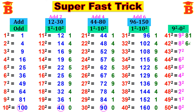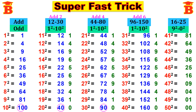We know: 9 squared is 81, 8 squared is 64, 7 squared is 49, 6 squared is 36, 5 squared is 25, 4 squared is 16, 3 squared is 09, 2 squared is 04, 1 squared is 01, and 0 squared is 00. Next step: write numbers from 16 to 25. Take 16 and write continuously up to 25: 17, 18, 19, 20, 21, 22, 23, 24, 25.